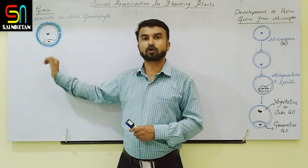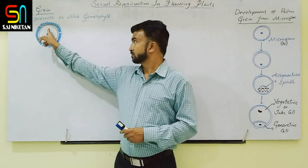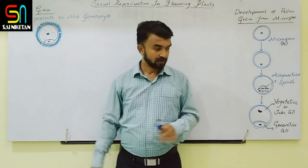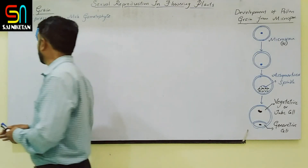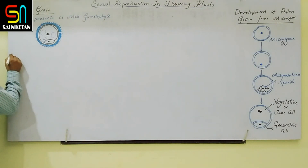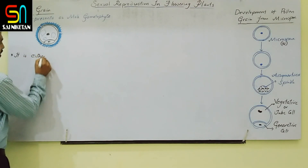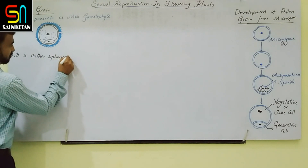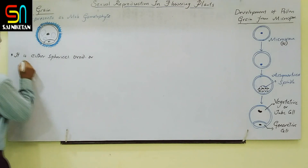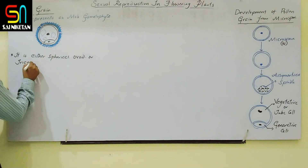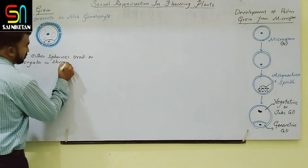At this stage, the gametes have not yet been produced, so the pollen grain is still immature — containing a vegetative cell and a generative cell. The second point: pollen grains are either spherical, ovoid, or triangular in shape, and measure about 25 to 50 micrometers in diameter. This varies from species to species.